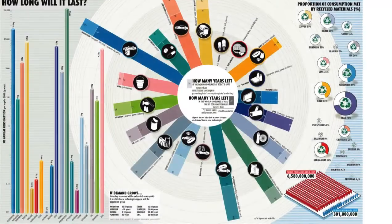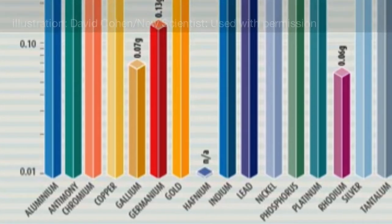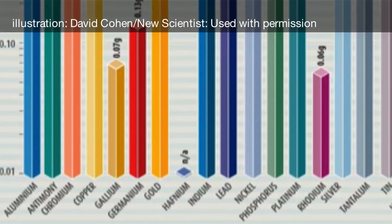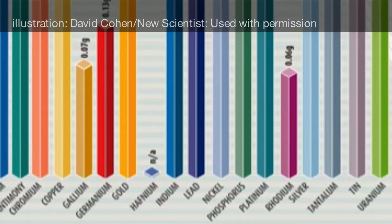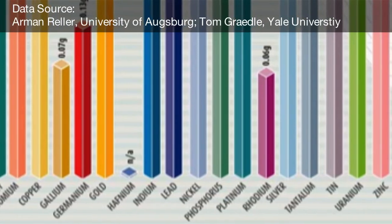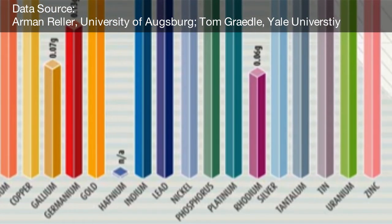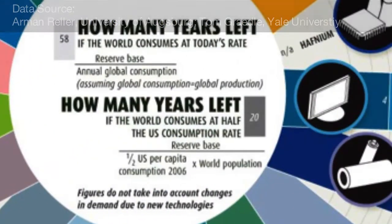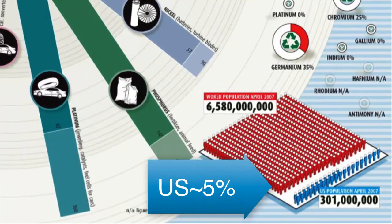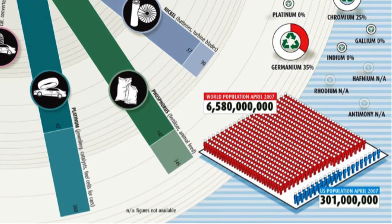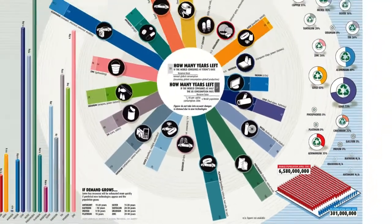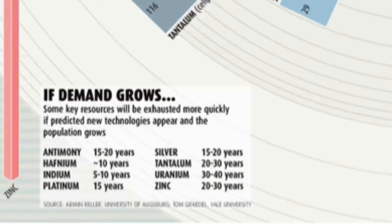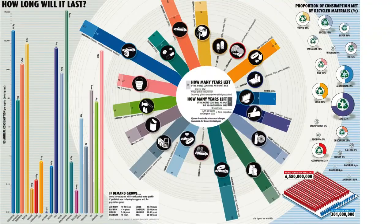This figure graphically depicts the different technological materials used in our global economy. It illustrates the answer to the question: how many years do we have until we deplete our global reserves of these technological resources if the world consumes at half the United States consumption rate? Recall that the United States represents about 5% of the global population, yet we consume far in excess of 5% of most global material reserves. The data presented here are rather alarming because they predict that we will run out of key reserves in 10 years or less.